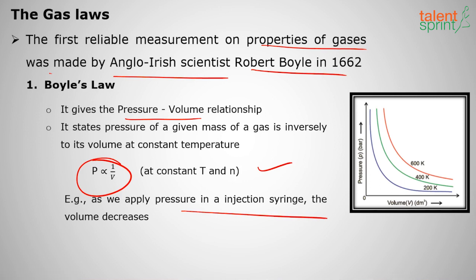A very best example is when I am applying pressure in an injection syringe, the volume will decrease - pressure is increasing but volume is decreasing. Pressure is always inversely proportional to volume. Can I say p1v1 equals p2v2? You can solve the problems also. Pressure is always inversely proportional to volume at constant temperature.